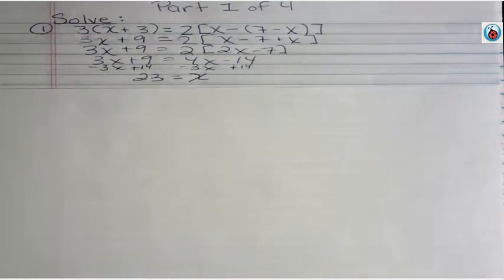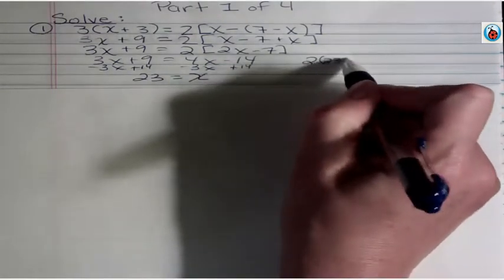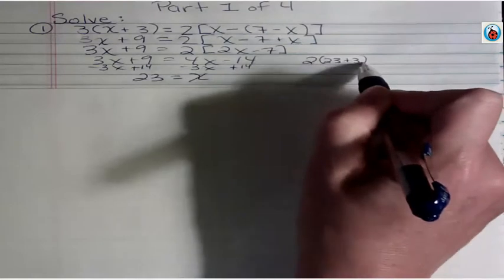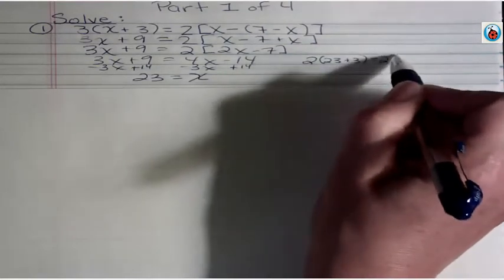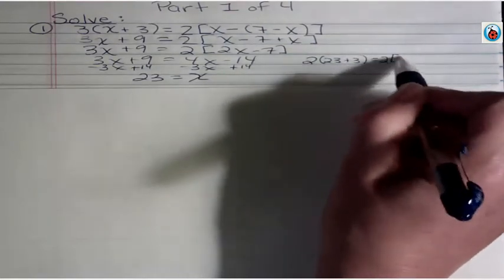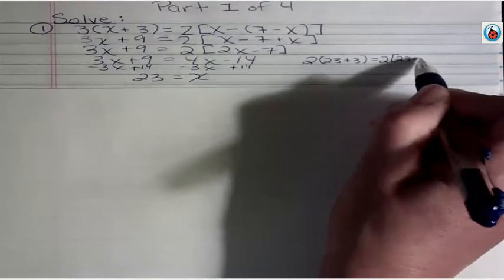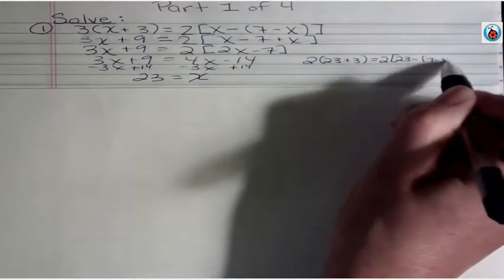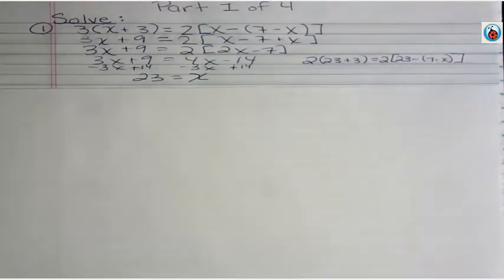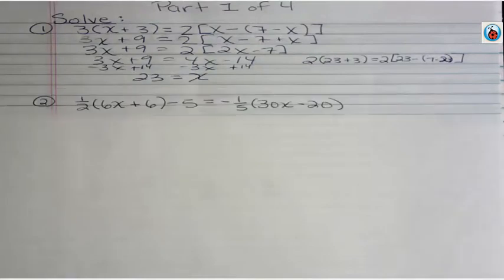You know that if you want to check that you would come over here and put 23 in where the x was and if it's truly a solution both sides of the equation will equal the same number. So I'm going to leave that for you to do, but where there's an x I want to put 23 and I'm going to let you go back and work that out to show that it's actually a true solution.